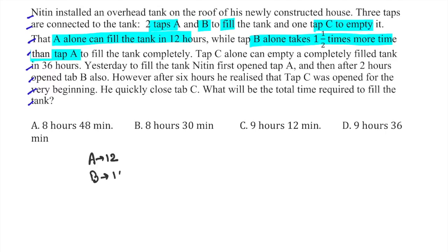so we can say B is 18 hours. C alone can empty in 36 hours, so C empty is 36 and we know this one is negative. So first of all, we want the work done. The LCM value is 36, efficiency is 3, 2, and minus 1.